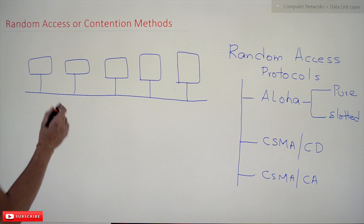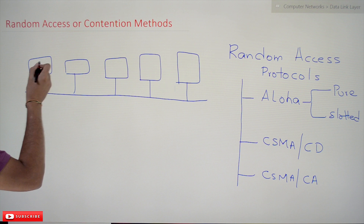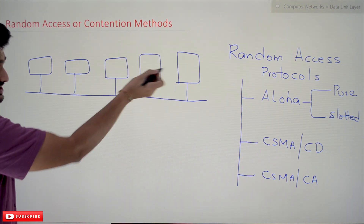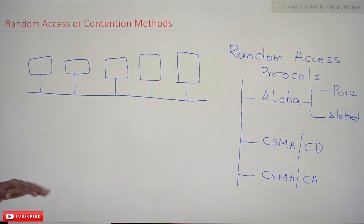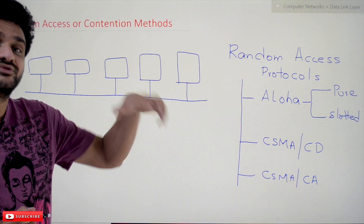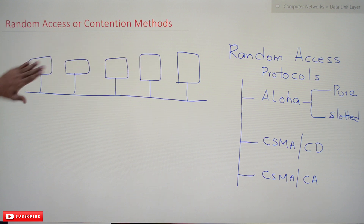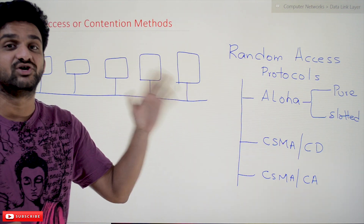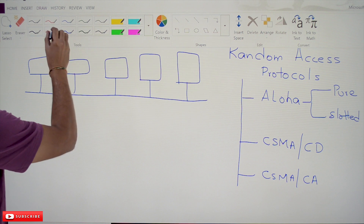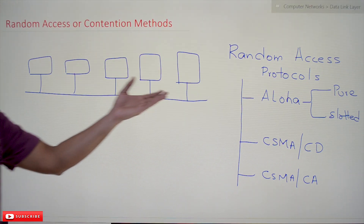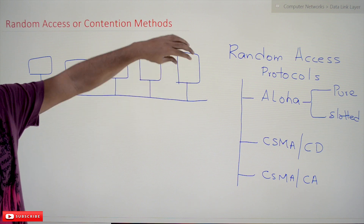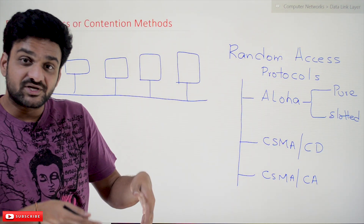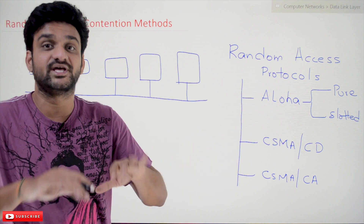In our previous class we had a visualization where the computers are going to access a shared medium. This is the medium through which all these computers can transmit data — that is what we call a shared medium. In the shared medium, no system is superior to another; each system is independent.